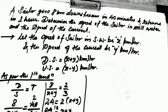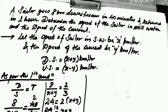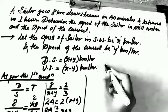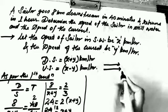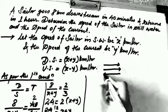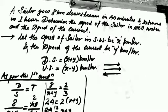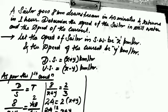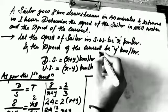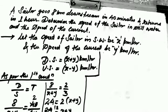Now for the second condition — the sailor returns back in one hour. Previously he was going downstream; when he comes back, his direction reverses while the water current direction remains the same. So this becomes an upstream condition. The upstream speed will be x minus y km per hour.